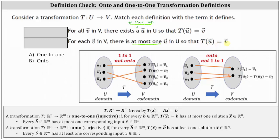We should recognize the definitions now, but just in case, looking at the notes below: a transformation T from ℝⁿ to ℝᵐ is one-to-one, or injective, if for every vector b in ℝᵐ, T of vector x equals vector b has at most one solution, vector x in ℝⁿ. Because there has to be at most one solution, we know the second definition above is the definition for one-to-one, which is (a). And of course, the other definition will be onto, but let's go ahead and review that.